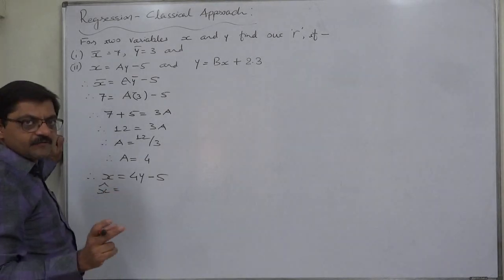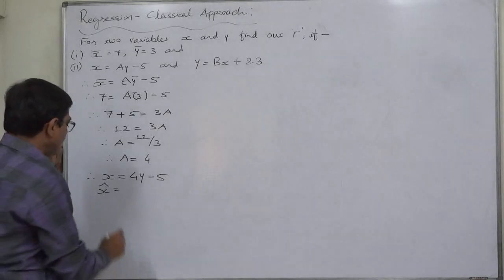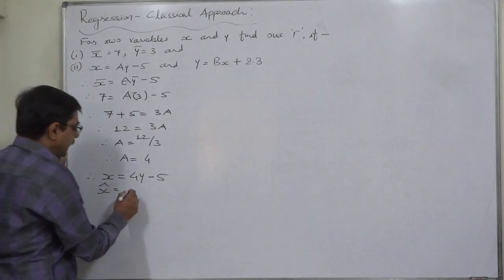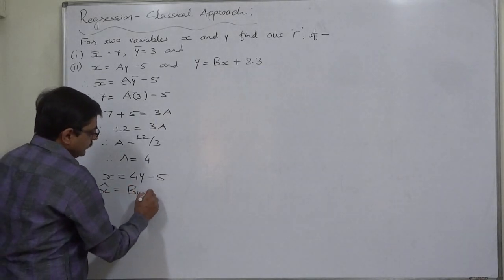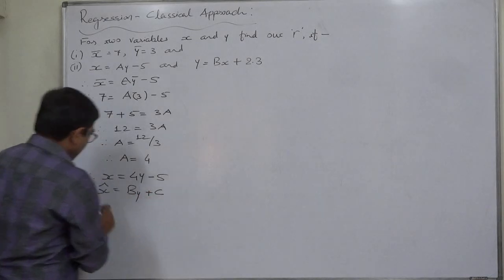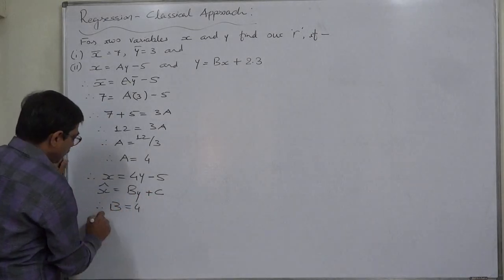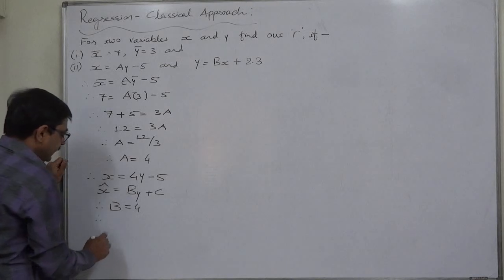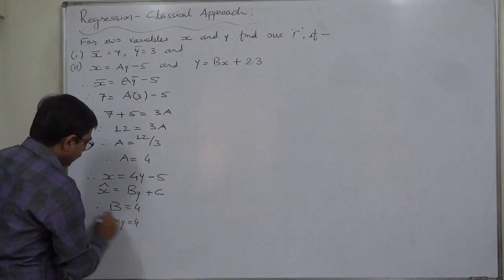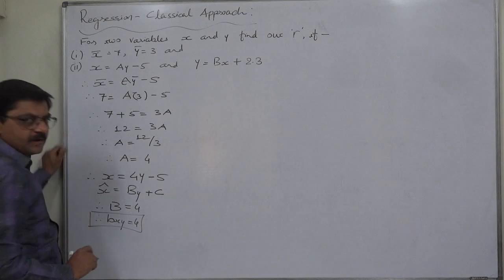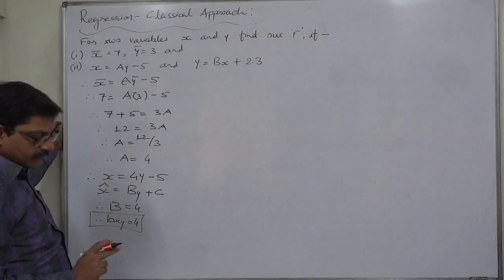Let's compare it with its standard format — the standard format of the equation of line of regression of x on y, that is x-cap equals to by plus c. Therefore b is 4, and therefore bxy is 4, because in the line of regression of x on y, b stands for bxy.